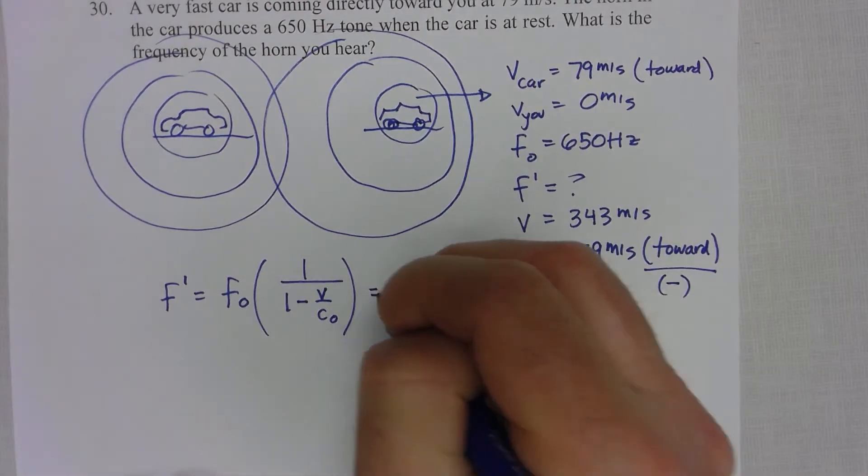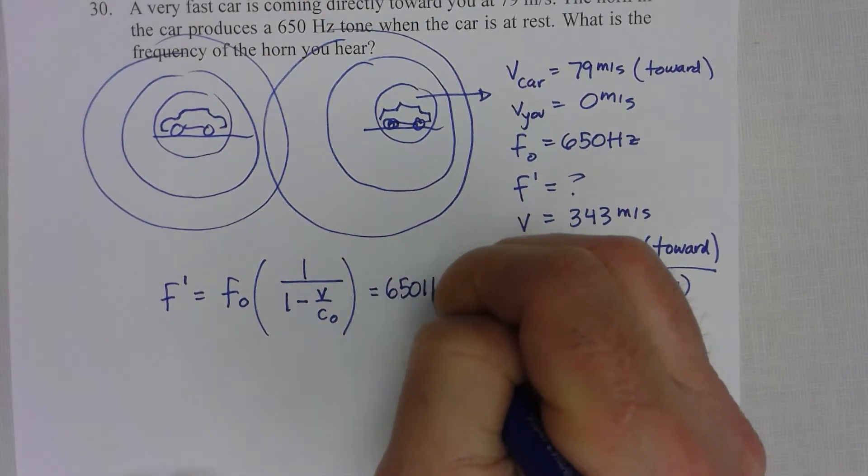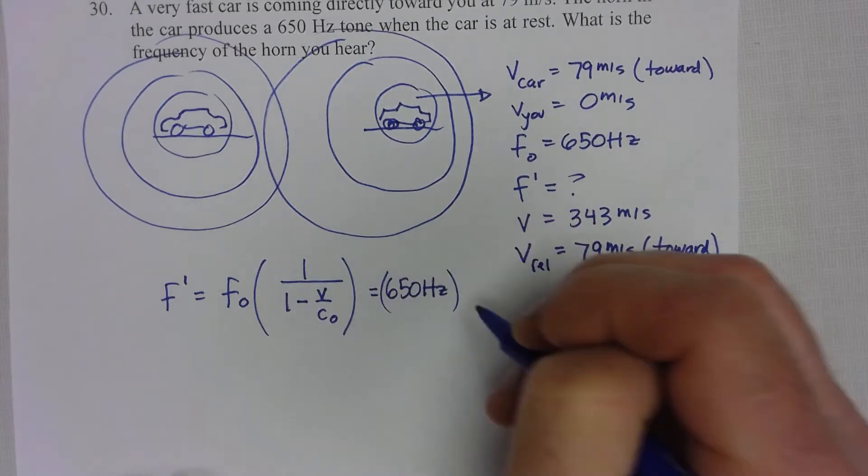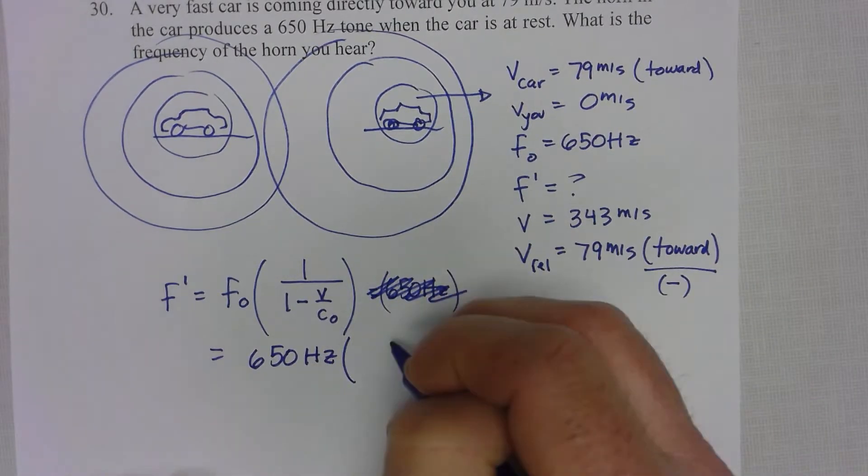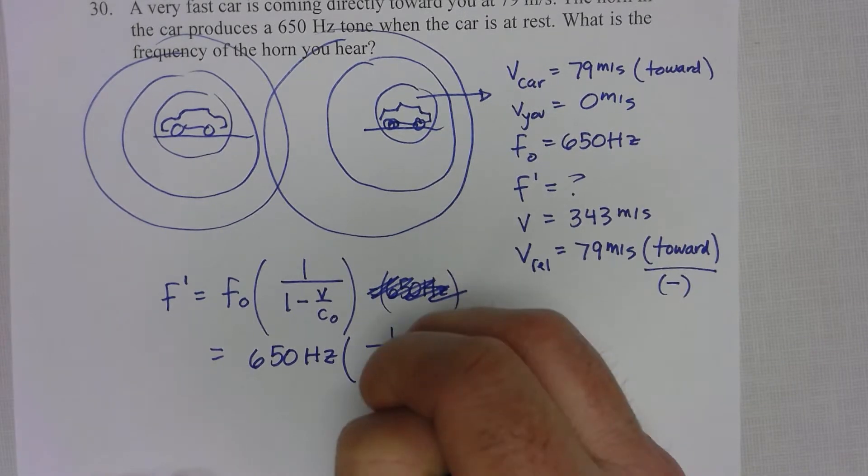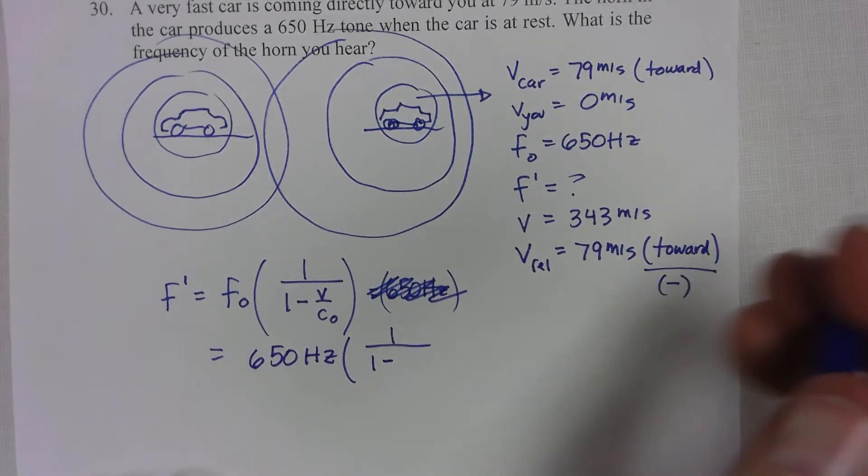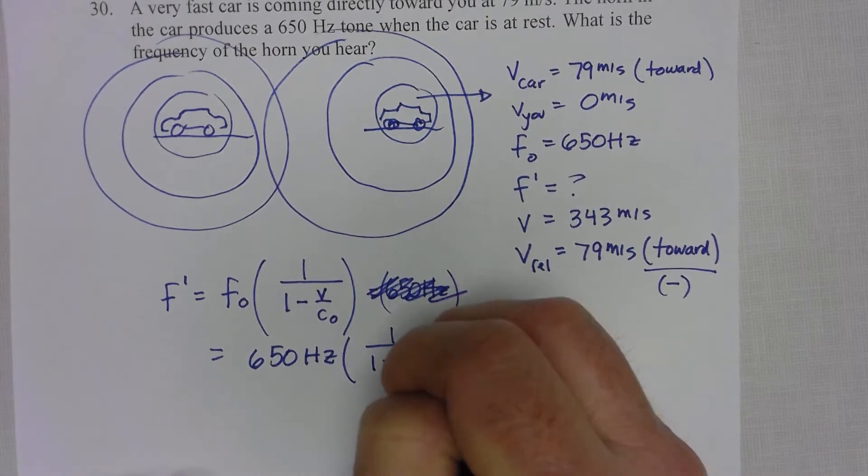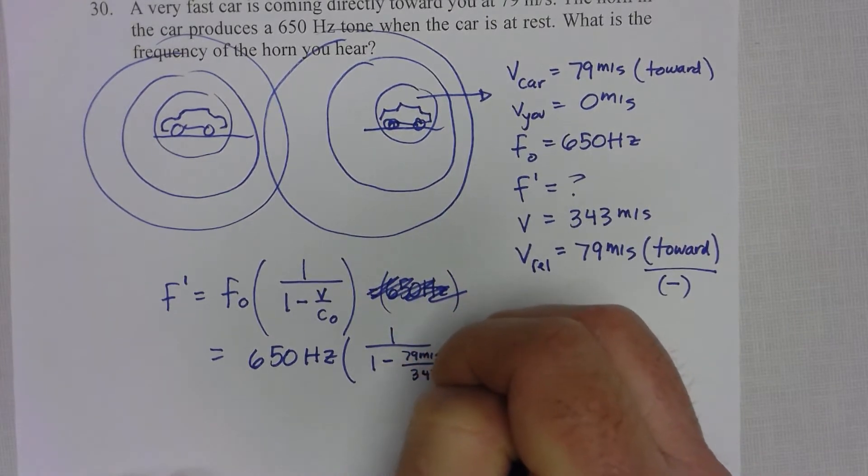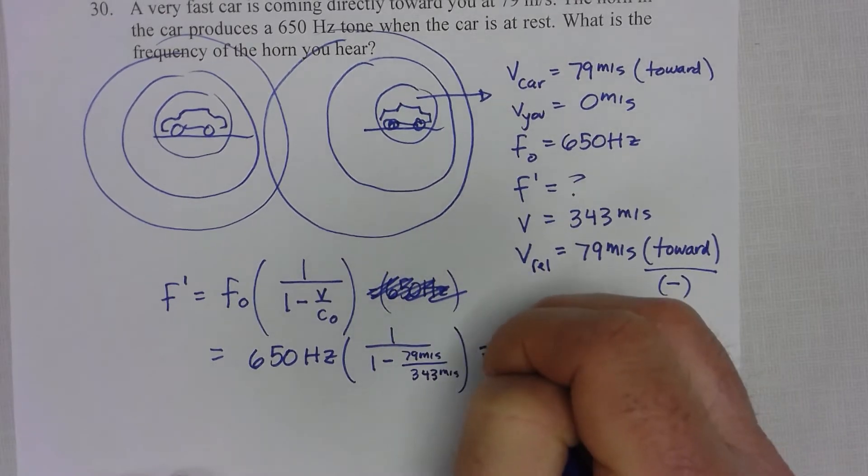So when I write down the numbers that I have here, 650 Hertz, and I multiply by the Doppler factor 1 over 1 minus 79 meters per second over 343 meters per second, I will find my answer.